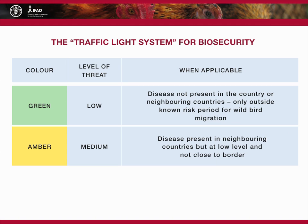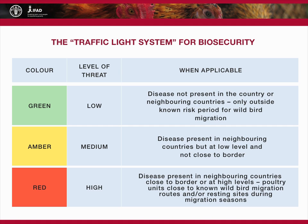Amber represents a medium threat level, and is used when disease is present in neighbouring countries at a low level and not close to the border. The highest threat level, red, should be considered when disease is present in neighbouring countries close to the border or at high levels. Red alert levels also apply when backyard poultry are close to known wild bird migration routes, or resting sites during migration seasons.